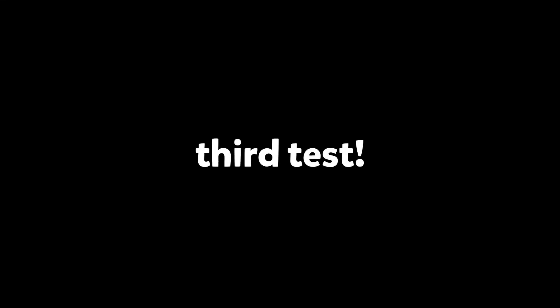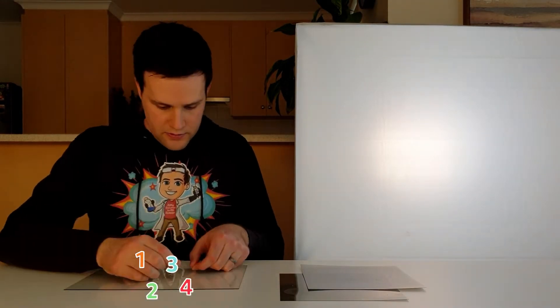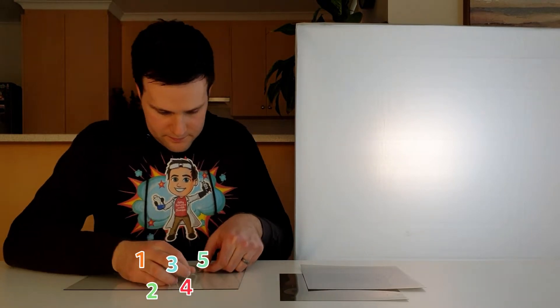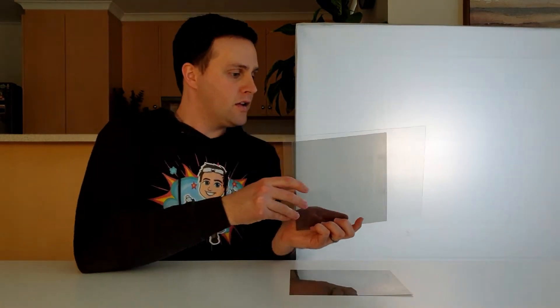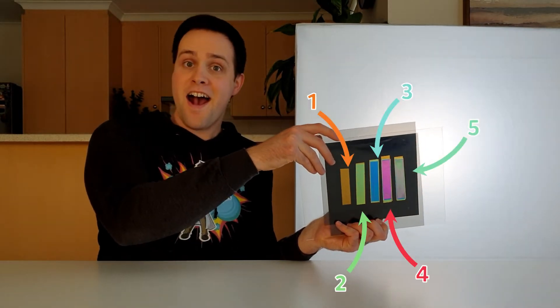And lastly, if we layer the tape on the glass so that we have 1, 2, 3, 4 and even 5 layers of tape and place it between the polarizers, each area of tape will be a different color depending on the number of layers.